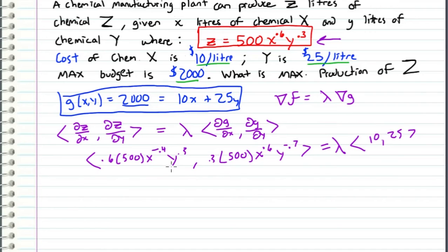So this gives us two equations and two unknowns which are x and y. The first equation comes from the x component of these vectors and then the second comes from the second component of these vectors. So the two equations I get is 0.6 times 500 times x^(-0.4) y^0.3 is equal to 10 times lambda. And then the second equation I get is 0.3 times 500 x^0.6 y^(-0.7) is equal to 25 lambda. So there's equation one, there's equation two, but don't forget we also have equation three which is just our constraint.